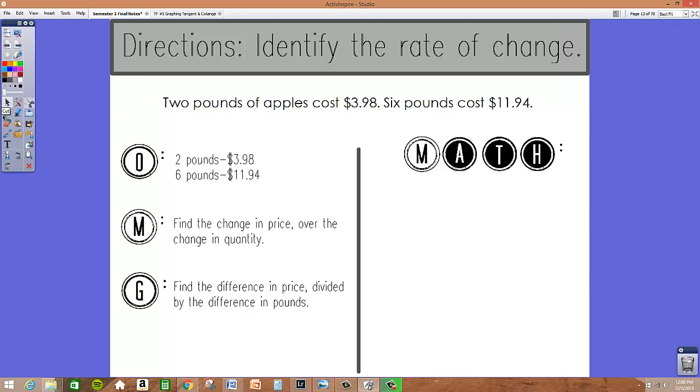Here's how we're going to do this. The first thing we're going to do is take the cost, the largest cost $11.94 and we're going to subtract that by the smaller cost which is $3.98. On the bottom we're going to figure out the change in pounds or the difference in pounds. So we're going to take six pounds and subtract it from two pounds.